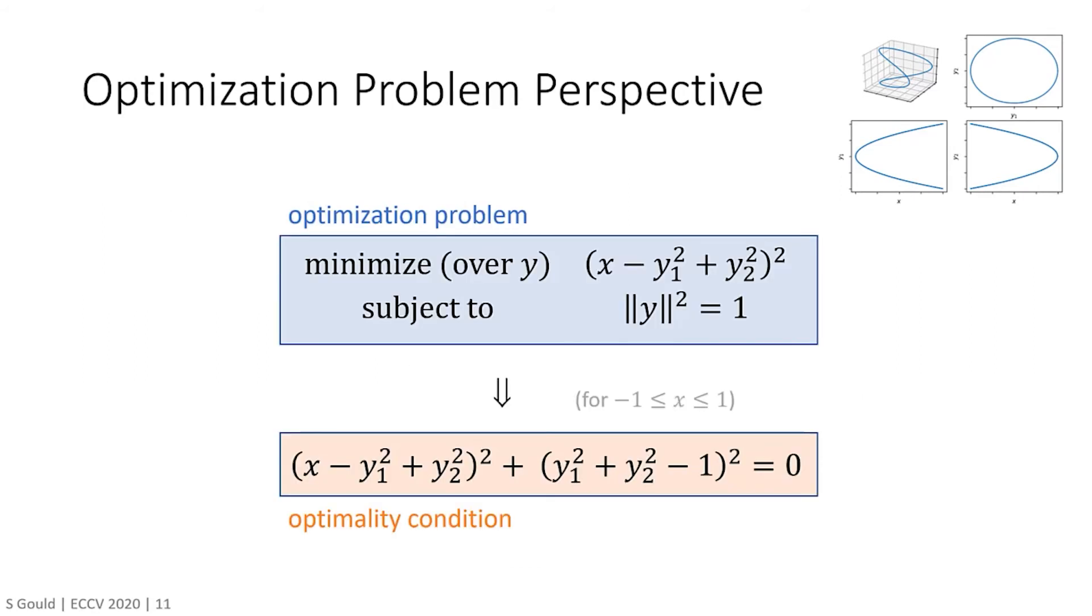I now want to introduce the idea of deep declarative networks. As discussed at the beginning, a conventional deep learning architecture involves composition of simple feedforward processing functions that are explicitly defined. Recently, researchers have been exploring deep learning models with embedded, differentiable optimization problems inside. Here I am showing the link between the implicit function that I showed earlier and its equivalent optimization problem. That is, given an input x, solving the optimization problem will find the y's that satisfy the implicit function, which in this case we call the optimality condition.